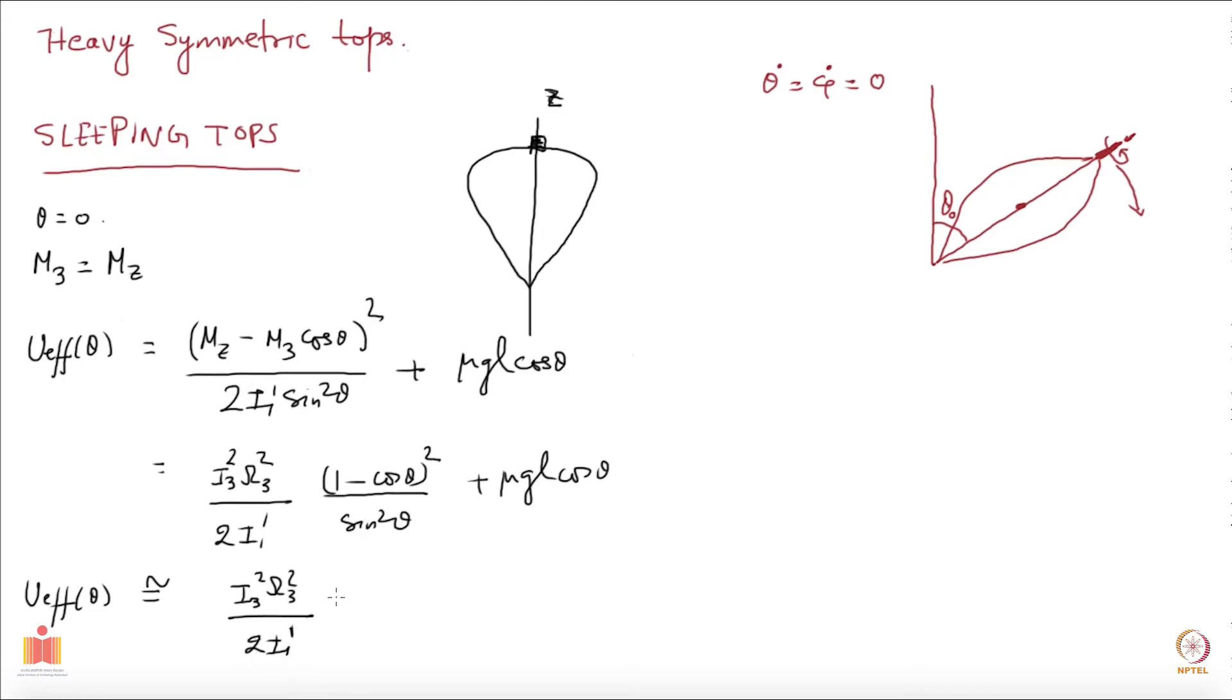cos theta you can approximate to 1 minus theta square over 2 which will cancel this one and you will have theta⁴ over 4. You will have sin square theta as theta square and you will have theta⁴ over 4 which will give you theta square by 4 and then plus mu gl cos theta is 1 minus theta square by 2.